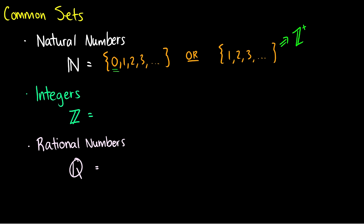For one, two, three, and so on I'll use Z+. The integers are a set of numbers which are either positive or negative and they're whole numbers — all the way from negative infinity, negative two, negative one, zero, one, two, all the way to positive infinity. That is Z, and that's a very important notion which we use a lot in discrete math.